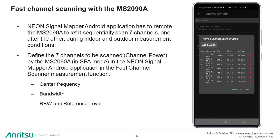Since we are focusing on the function needed to perform fast channel scanning in the MS-2090A, let's have a look at the different parameters we'll need to define. For the current example, we'll take the definition of 7 different channels by defining the center frequency, the bandwidth, and the resolution bandwidth of each channel, which can be totally different and independent from each other. All channel definitions are made in the NEON Signal Mapper Android application.